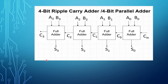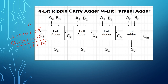Now let's consider two 4-bit numbers. A is equal to 0101, which is decimal 5. B is equal to 1010, which is decimal 10. Adding these two together gives 1111, which is 15. Here A0 is the least significant bit and A3 is the most significant bit, and similarly B0, B1, B2, B3 for input B.